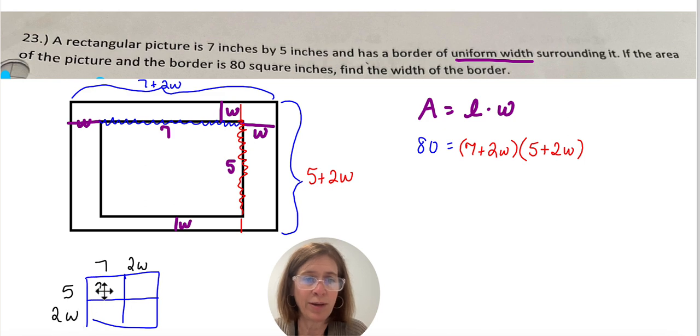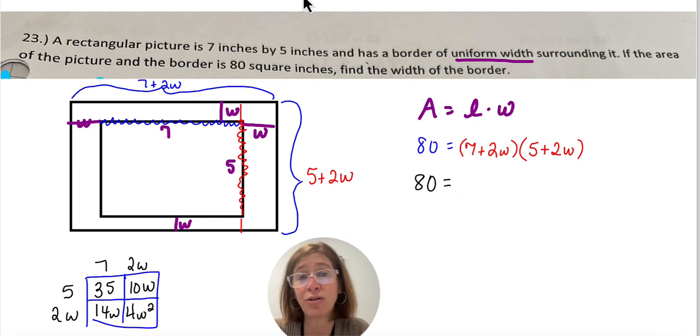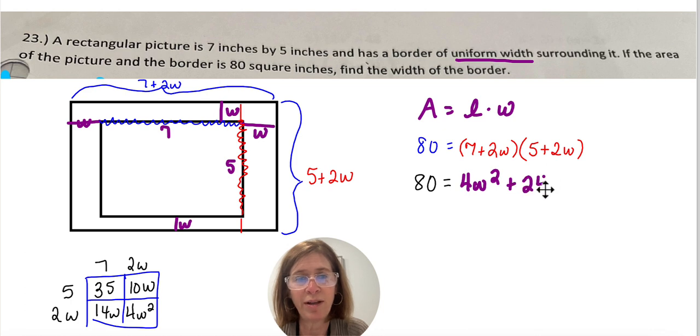So let me do that really quick. So the area model gives me 35, 10W, 14W, and 4W squared. Alright, so 80 equals, and I want to put it in standard form when I'm doing that out. So 4W squared plus 24W plus 35.